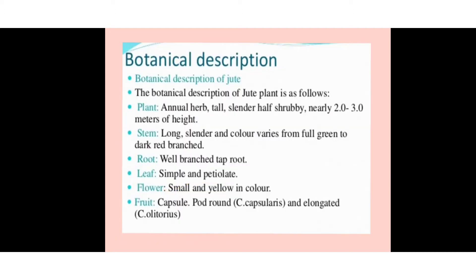Some botanical description of the jute plant: it is an annual herb, generally a shrubby plant two to three meters tall. The stem is long and erect, variously colored from green to dark red, with branched stems. The root is a branched taproot, leaves are simple, flowers are small and yellow, and the fruit is generally a capsule type.